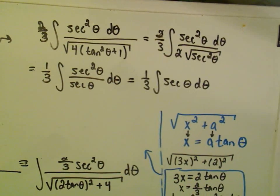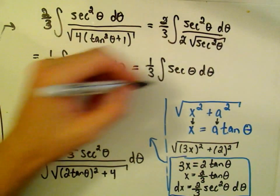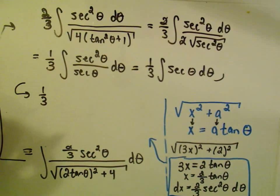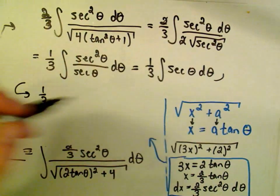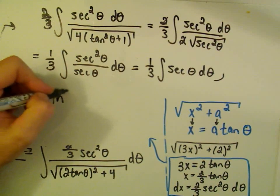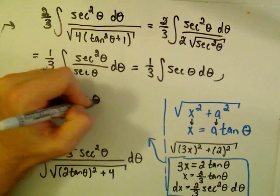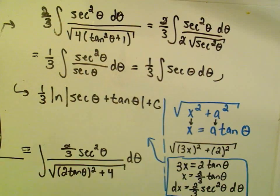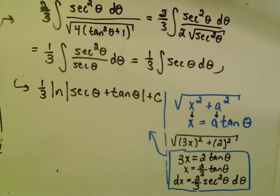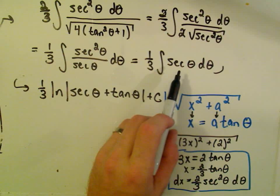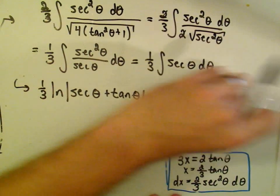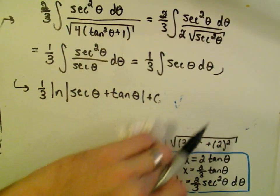Alright, so we're almost there now. Last, what we need to do is integrate secant theta. And this is one you may or may not be familiar with. If you integrate secant theta, you get the natural logarithm of secant theta plus tangent theta plus c. The way that you can actually justify that is you multiply top and bottom of secant theta by secant theta plus tangent theta. And then you end up doing a substitution to make this work out. Alright, so now we have integrated.